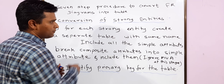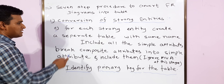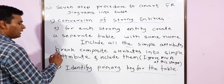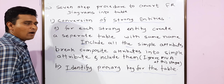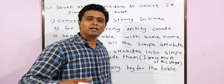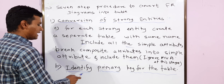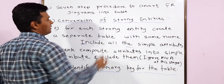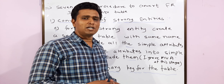I have divided this into two parts, A and B. Part A says: for each strong entity, create a separate table with the same name. Include all the simple attributes in that table and break composite attributes into simple attributes. At this stage we have to ignore multi-valued attributes — attributes having multiple values like email or mobile. Part B: identify a primary key for the table, which we will represent using an underline.